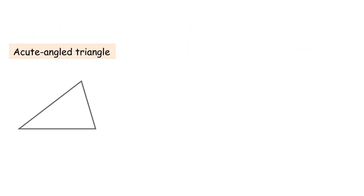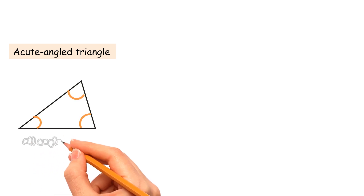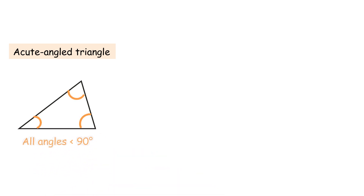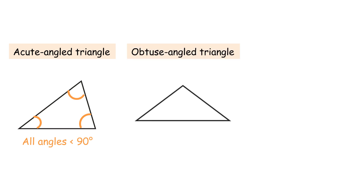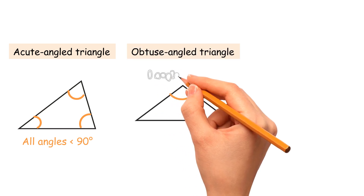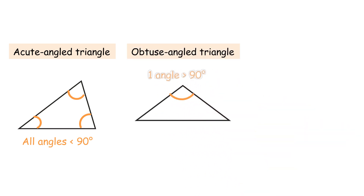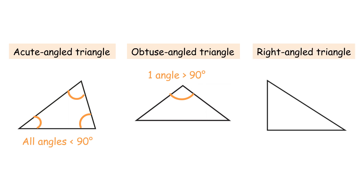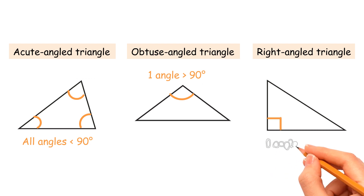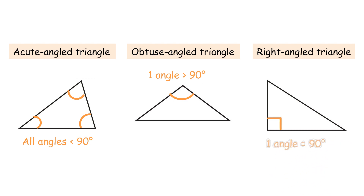Type of triangle by angle: Acute angle triangle — every interior angle is an acute angle. Obtuse angle triangle — one of the interior angles is an obtuse angle. Right-angled triangle — one of the interior angles is a right angle, which is 90 degrees.